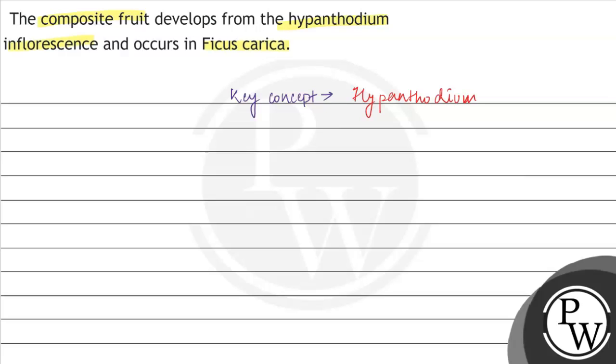So hypanthodium inflorescence is a special type of inflorescence which can be found in Ficus carica. And if we see the diagrammatic representation, then it can be found in this way. It can be a pear-shaped flower.